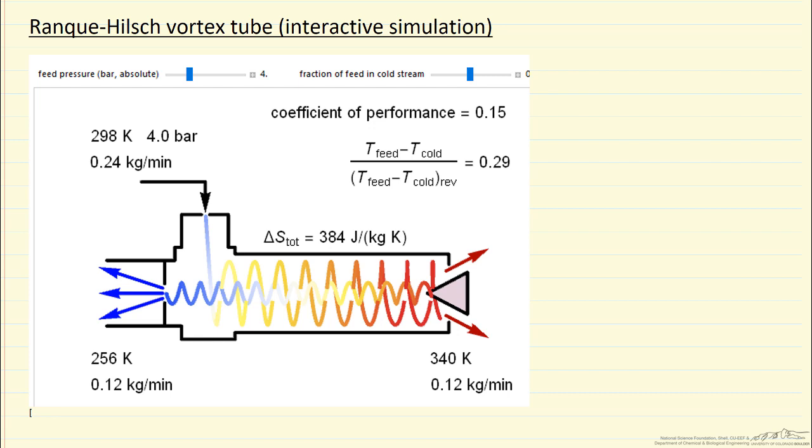The idea is that we can feed in air at higher pressure than atmospheric pressure and around room temperature, and we can split the air into a cold gas leaving here (blue indicates lower temperature) and hot gas leaving here (red is the other end of the temperature scale in this example).